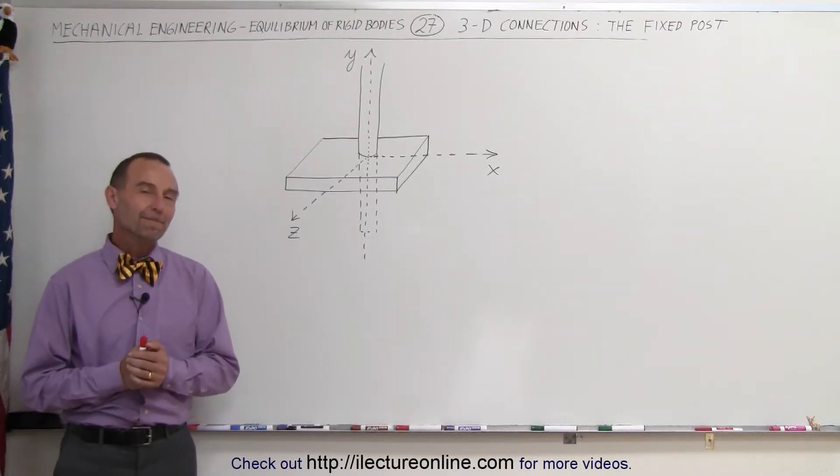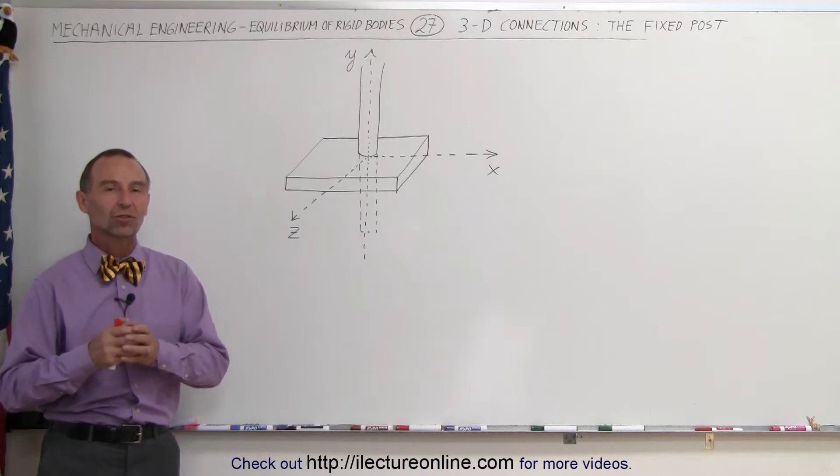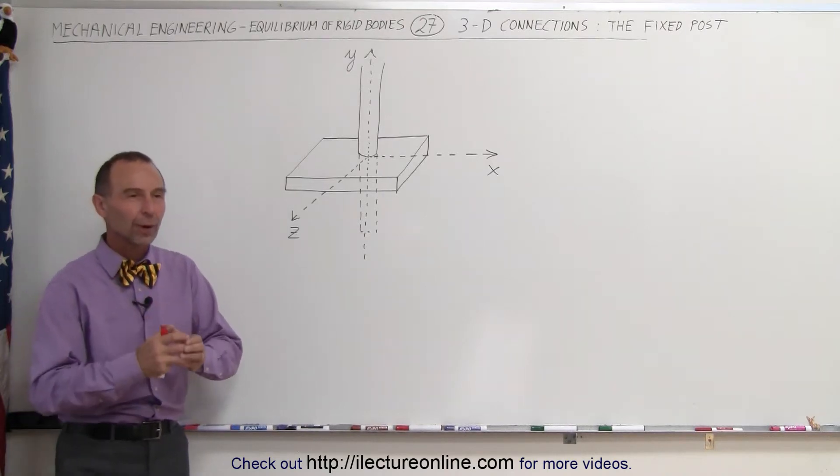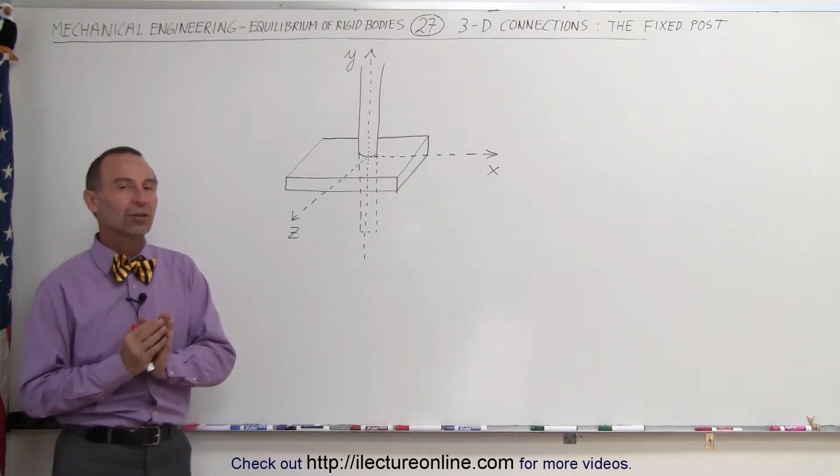Welcome to iLecture Online. Now let's take a look at our next connection, the fixed post connection. Simply have a post fixed in the ground or fixed in a concrete barrier or something like that, so it cannot move in any direction.